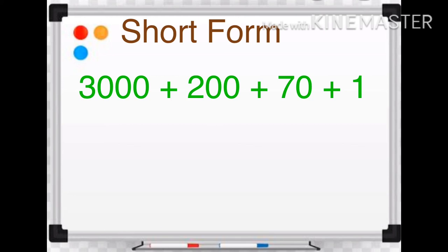You can see here 3000, that means 3 is in the thousands place. Plus 200, that means 2 is in the hundreds place. Plus 70 means 7 is in the tens place. Plus 1 means 1 is in the ones place. So we can write this as 3271.